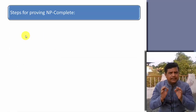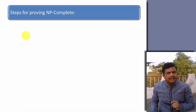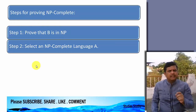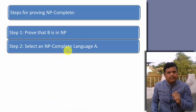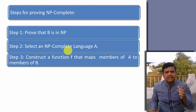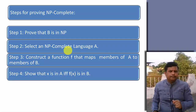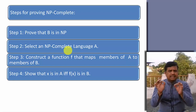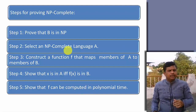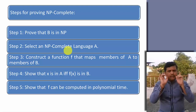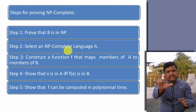Let us understand the steps required to prove any problem as NP complete. The first step is prove that B is in NP. The second step is select a known NP complete problem, call it problem A. The third step is construct a function F that maps members of A to members of B, such that X is in A if and only if F of X is in B. The last step is to show that F can be computed in polynomial time. Any problem can be shown NP complete by these five steps.